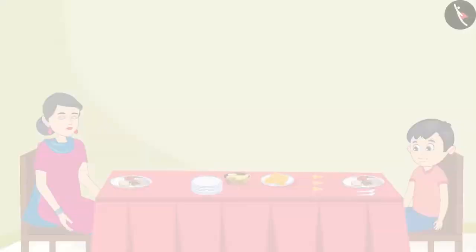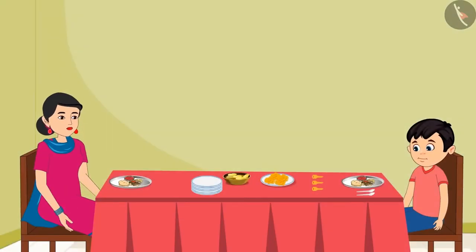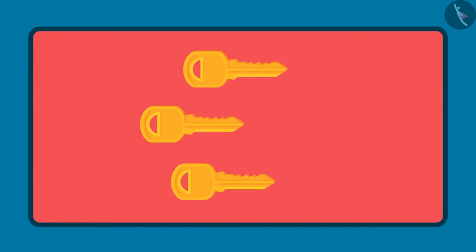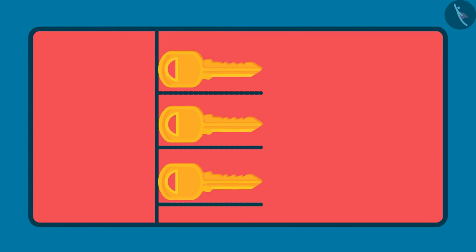Isn't it, mummy? Yes, Chotu. Very good. So kids, now you also won't make a mistake in comparing the length of two or more objects like Chotu. Right friends? Always remember that before comparing the length of objects, first we should keep the objects together so that one end of all the objects is together. And then the lengths of these objects should be compared.